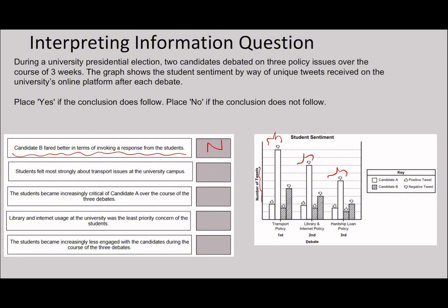Students felt most strongly about transport issues at the university campus. Well, once again, if I just roughly eyeball it, I feel like that's going to be true because you can see that for each of them, for candidate A, the numbers go down, and it's similar for candidate B as well. So therefore the strongest one is definitely transport policy.